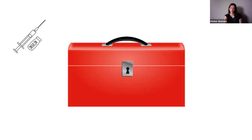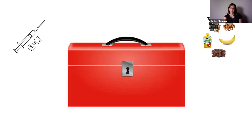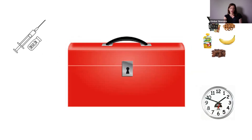The first tool is insulin — when do you give it in relation to exercise, and how much? The next tool is carbohydrates or high glycemic foods — when do you need to eat those, mostly to avoid low glucose levels but also to fuel your body as an athlete. Another tool is time of day: are you going to exercise before a meal, after a meal, when you wake up, or before you go to bed? All of those things will impact how your body reacts.